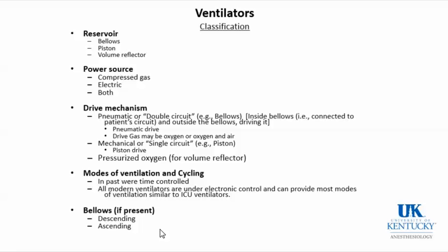Another important variable is the power source. In the old days, this was entirely compressed air. More recently, the power source has been electronic, but most modern machines now use a combination of both. The implication is that ventilators may malfunction if you lose either the gas source or the electrical source. There are two commonly used drive mechanisms: one is pneumatic, and the other is mechanical — so-called single circuit.